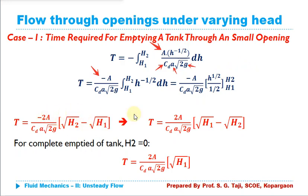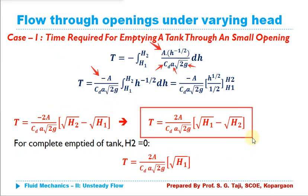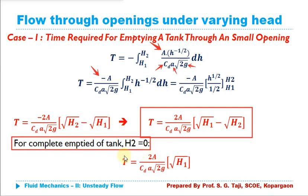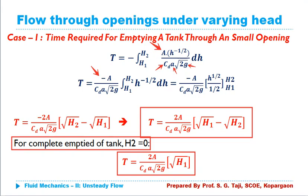The final equation for T is: T = 2A(√H1 - √H2) / (CD × a × √(2g)). If the tank is to be emptied fully, H2 = 0, and the equation simplifies to: T = 2A√H1 / (CD × a × √(2g)), where CD is the coefficient of discharge, a is the area of the orifice, A is the area of the tank, and H1 is the initial height of water. Remember these two equations as they will be used in solving numerical problems.